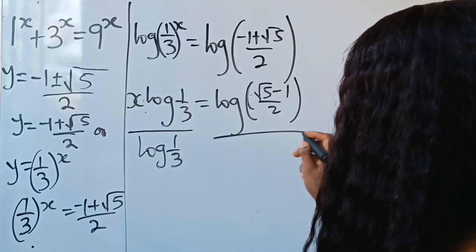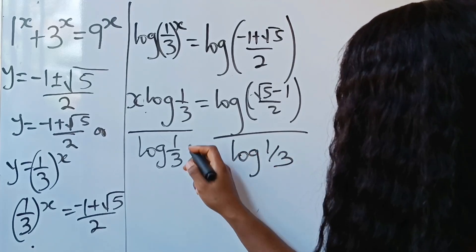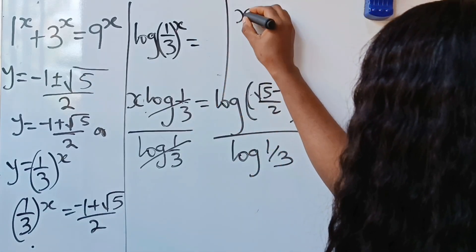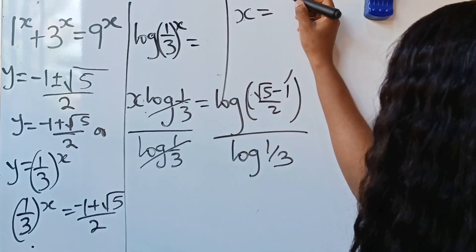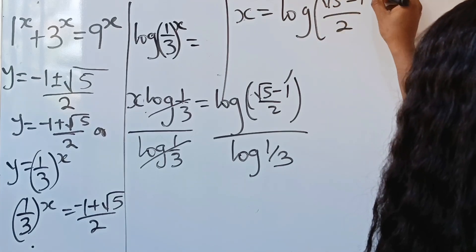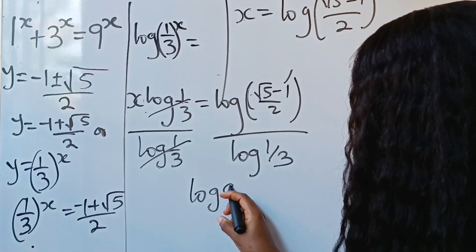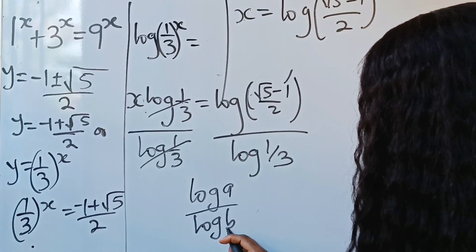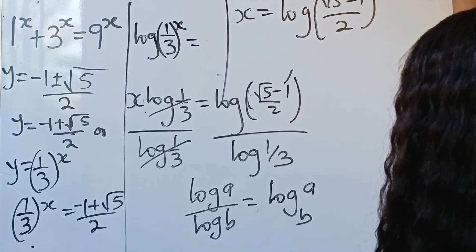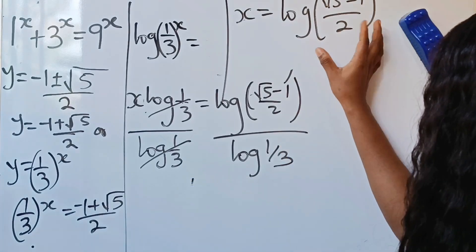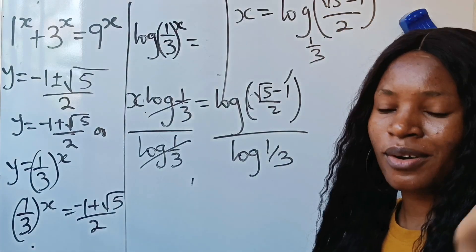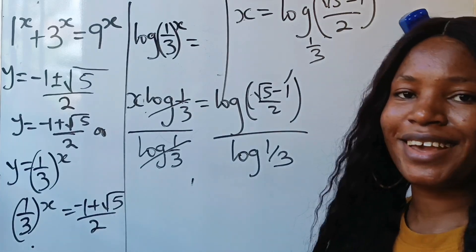To get x, we divide both sides by log(1 over 3), which cancels, leaving x equals log of (root 5 minus 1 divided by 2) divided by log(1 over 3). Using the change-of-base rule — log a divided by log b equals log base b of a — we can write this as log base (1 over 3) of (root 5 minus 1 divided by 2), and that is our final solution. Thank you so much for watching, have a lovely day.